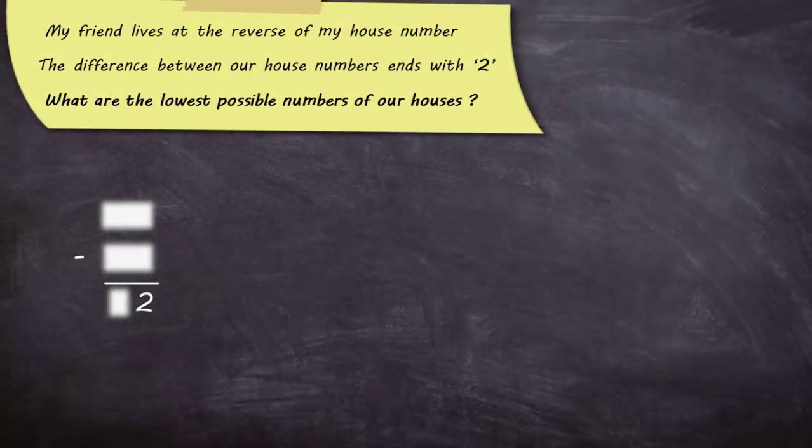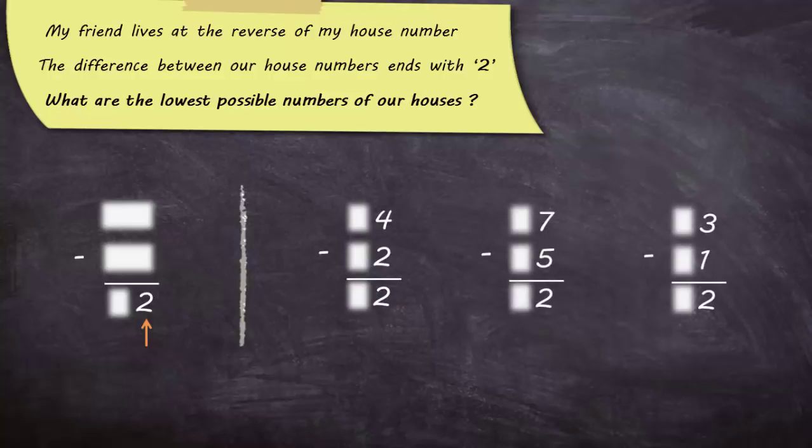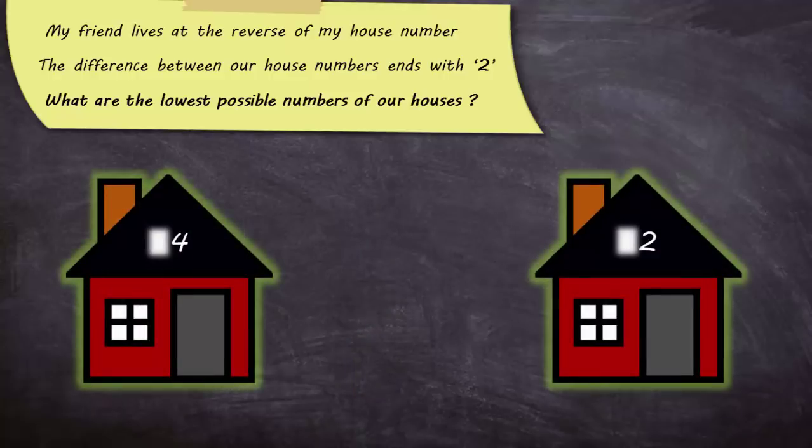The objective is to get a difference value that ends with 2. We can get this in several ways, such as 4 minus 2, 7 minus 5, 3 minus 1, etc. Let's consider the example of 4 minus 2. If the house numbers end with 4 and 2, we may get the difference ending with 2.